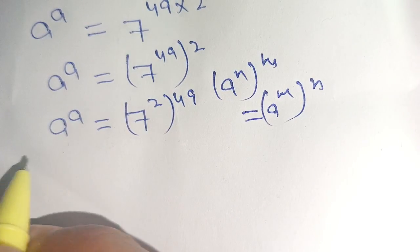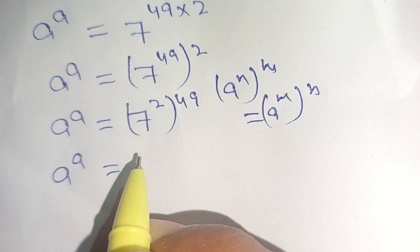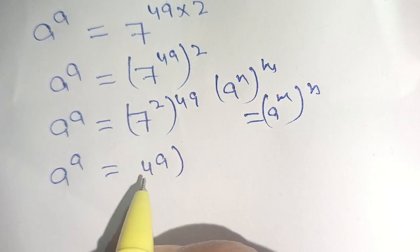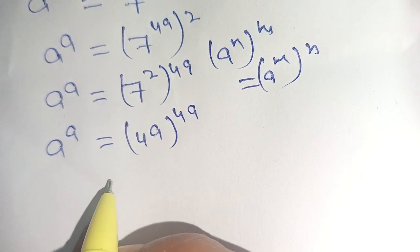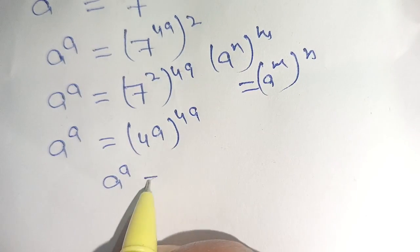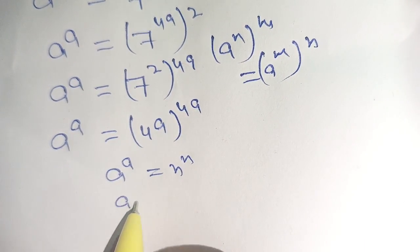Thus it becomes a raised to power a is equal to 7 raised to power 2 which becomes 49 bracket power 49. Now from this identity if a raised to power a is equal to n raised to power n then we can compare a is equal to n.